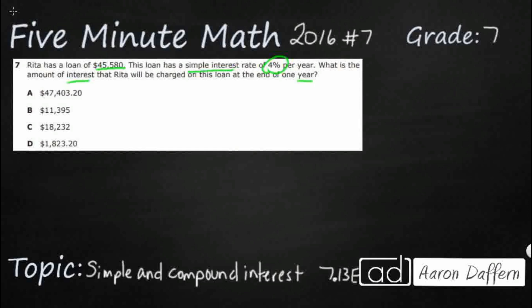If we look on our mathematics chart, we're going to see this right here: I equals PRT. That's all we get for simple interest. What we need to do is remember what each of those letters stand for, and then we're going to plug and play. So let's write this out a little bit.